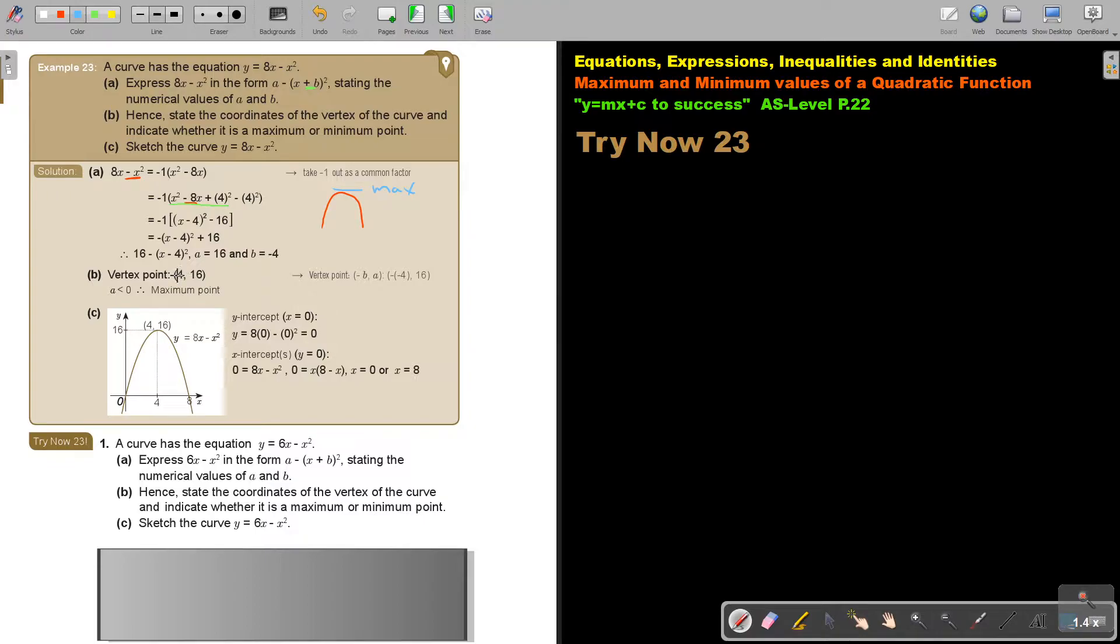So the vertex is 4, change the sign, positive 4 and 16. It's a maximum point. And then sketch the curve. You have the vertex, you can factorize it to see where it cuts the X axis. When you want to see where the Y intercepts you make X 0, and the X intercepts you make Y 0, and then you can just make a sketch with that point. I want you to stop the video and I want you to do number 1. You can continue the video as soon as you are finished.